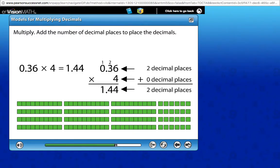Multiply. Add the number of decimal places to place the decimal. The total width is 1.44 meters.